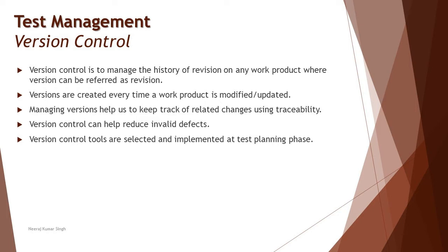So 1.0 was the initial version, and as and when we make any changes — addition, deletion, or editing of existing data — we create a new version: 1.1, 1.2, 1.3, 1.4. If a requirement is completely transformed, for example earlier the expectation was a login page and now we're talking about sign-up, then it turns out to be version 2.0 — a complete transformation. The release management team handles the versioning conventions, and tools are often used to trigger a new version every time you make a change.